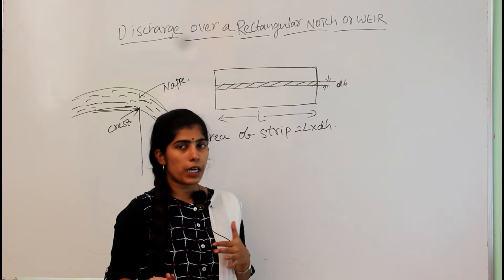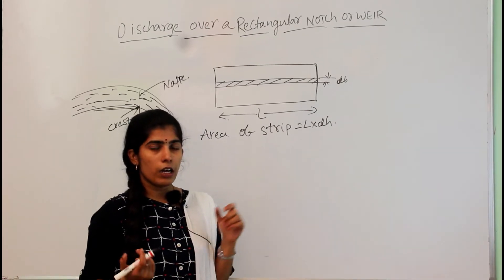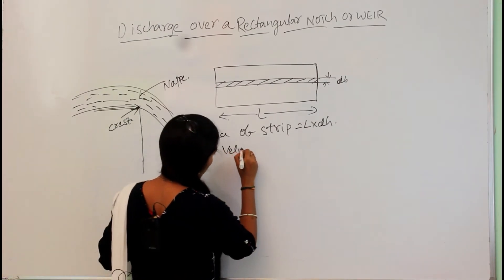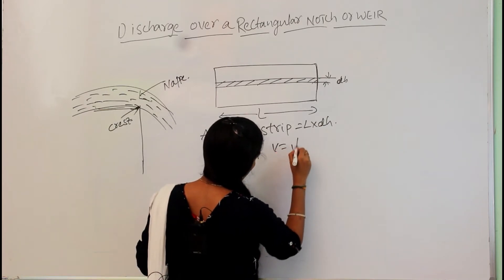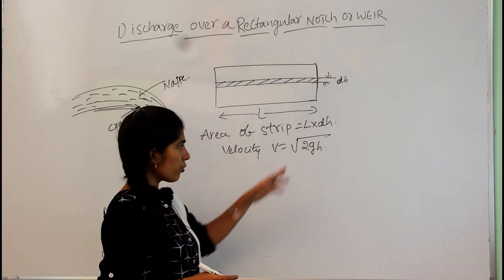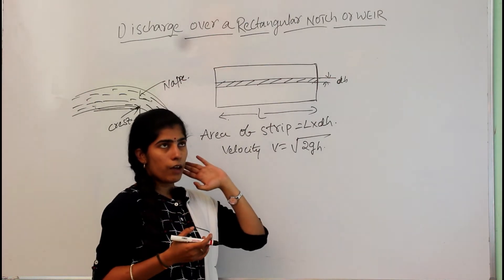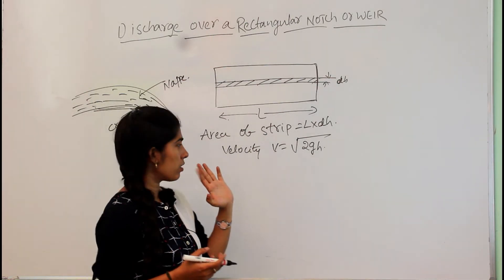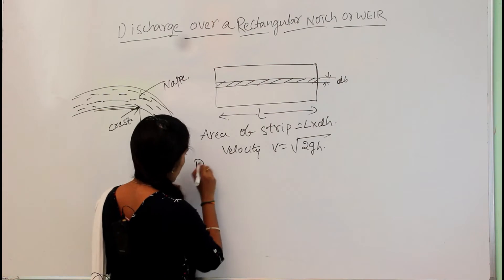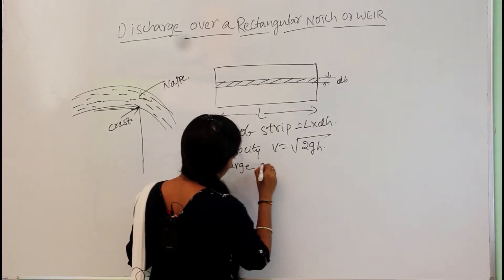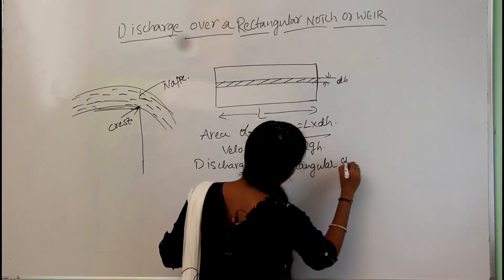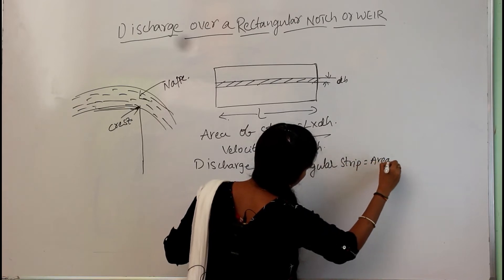We already know the discharge equation is obtained by multiplying the area of the section by velocity. The velocity is given by Torricelli's equation: v = √(2gh). We already derived this when discussing orifices and mouthpieces. Now we are deriving the discharge for this strip — that is, the discharge for the rectangular strip equals area multiplied by velocity.